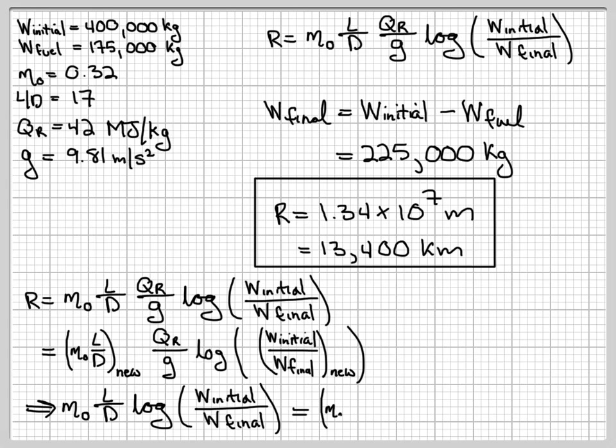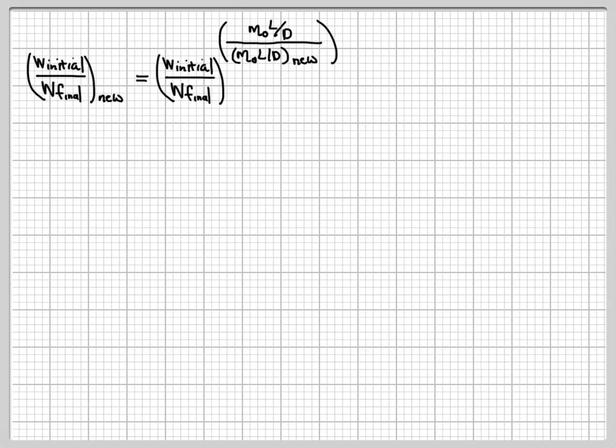I can rearrange that a bit because QR over g is a common term that goes away, and I find the relationship between the efficiencies and weight ratios. Then I can take that expression and solve for the new weight ratio. The new weight ratio is equal to the old weight ratio raised to the power of the ratio of the efficiencies.